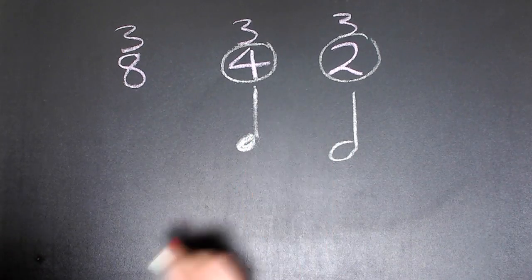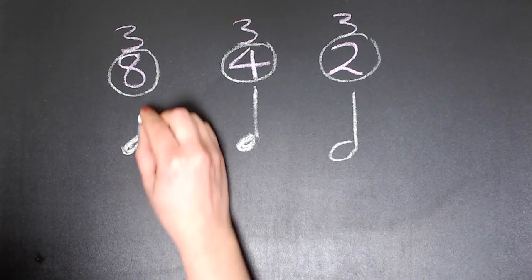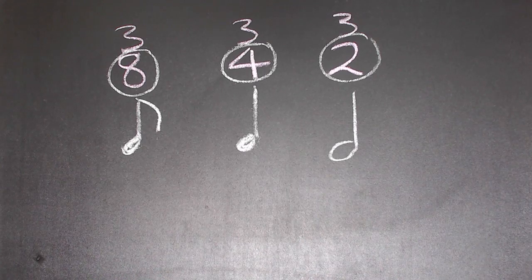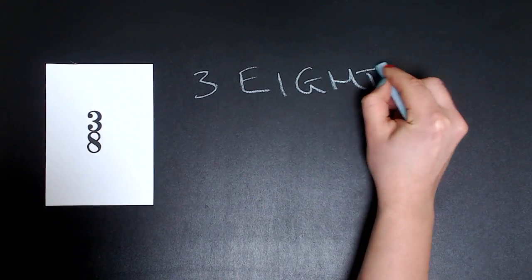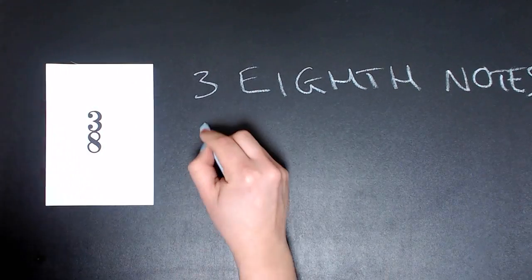A 4 tells us we're using quarter note beats, and an 8 tells us we're using eighth note beats. 3/8 tells us there are three eighth note beats in a measure.